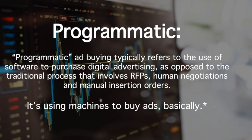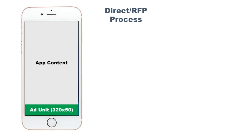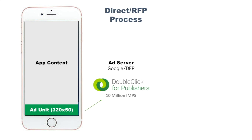To illustrate that, let's say we have an app and we're going to go through the traditional direct RFP process — RFP being Request for Proposal. I have an app with an ad unit in green, 320 by 50, and every month I get about 10 million impressions from users opening and using my app. I'm using Google's DFP as my ad server, and I want to sell those ads — I want to monetize that. So I'm going to go out directly to an advertiser and try to sell to them.